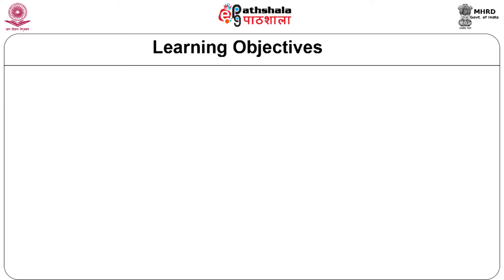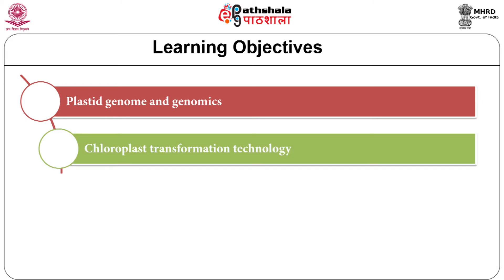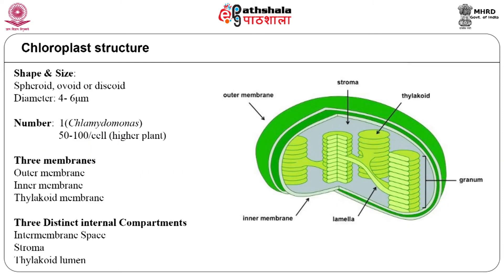In this module we will study more about the methods of chloroplast transformation. The learning objectives for this module are: plastid genome and genomics, chloroplast transformation technology, advantages of plastid transformation, manipulation of agricultural traits through transplastomic approach. Plastids are double membrane-bound organelles found in green algae and most cell types of plants.